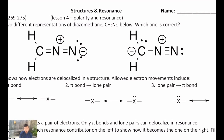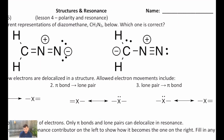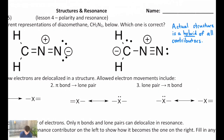For instance, I have two representations of the diazomethane molecule in front of you, and it says which one is correct. Actually, both are correct, because the true structure, the actual structure, is a hybrid of both of these. The only thing that's different is the placement of pi electrons and lone pair electrons — it's the only thing that changes when you look at different resonance contributors.